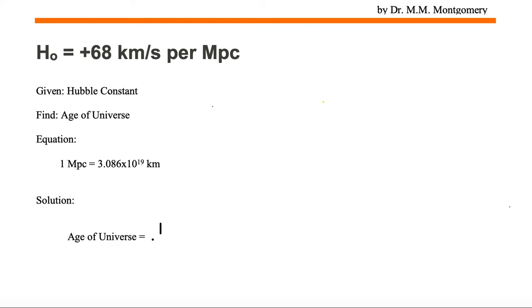The age of the universe is 1 divided by Hubble's constant. So let's go ahead and substitute in. We've got 1 in the numerator, and we need to put Hubble's constant in the denominator, which is 68 kilometers per second.